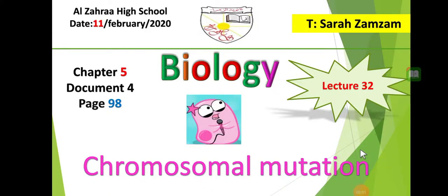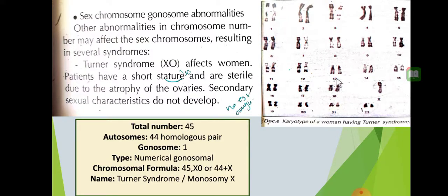Good morning everybody, hope you're fine and safe. Today we are going to continue our document on chromosomes and mutation. We're going to learn about mutations that take place on the sex chromosome, or gonosome. Gonosomal abnormalities — other abnormalities in chromosome number — may affect the sex chromosome, resulting in several syndromes. The word 'syndromes' means a cluster of diseases.